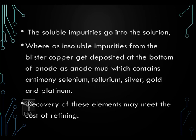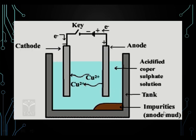The soluble impurities go into the solution and the insoluble impurities are collected at the bottom, which is called anode mud. Anode mud contains antimony, selenium, tellurium, silver, gold and platinum, which were already present in the ore of copper — blister copper. Recovering these metals is costly but can help meet the cost of refining. The impurities in anode mud can be seen clearly, and it contains different metals that were present in the ore.